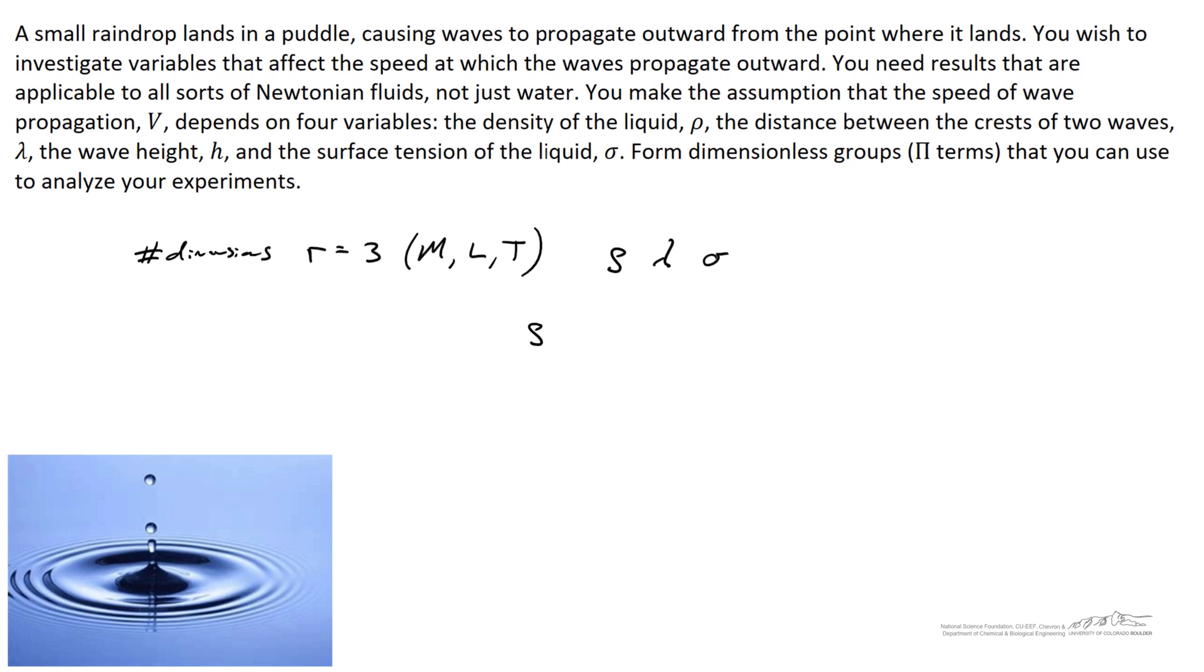So the dimensions for density is something like kilograms per cubic meter, or we'd say mass per length cubed. The dimensions for wavelength are just meters, or dimensions of length, and the dimensions of surface tension are equal to a force per unit length, so a newton per meter, for example.